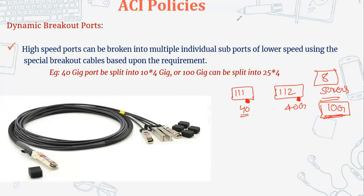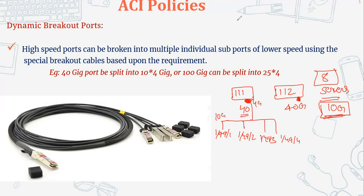In ACI it supports the breakout of ports. What it will do is this single port will be physically one port but logically it will be converted into four. For example, if the port number is 49, it will become 1/49/1, 1/49/2, 1/49/3, and 1/49/4.